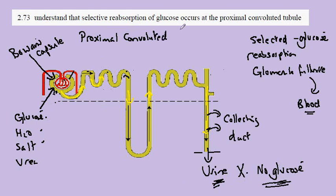Convoluted means twisted, tubule means tube. Proximal means first, convoluted means twisted, tubule means tube - the first twisted tube. In this first twisted tube section, glucose is removed.